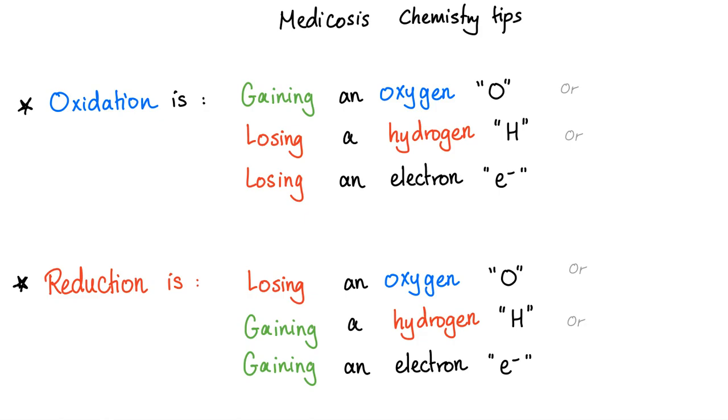Before we talk about oxidation and reduction, we need to understand what oxidation is. Oxidation is one of three things: gaining oxygen, that's why we call it oxidation; losing a hydrogen; or losing an electron, because an electron is negative. When you lose a negative, you are positive. That's a good thing - it's oxidation. Reduction is the exact opposite. You lose an oxygen, or you gain a hydrogen, or you gain a negative electron. Any of these are called reduction or oxidation.